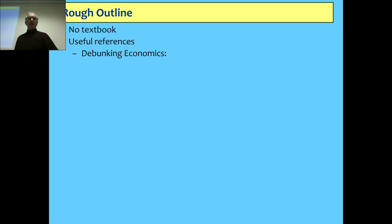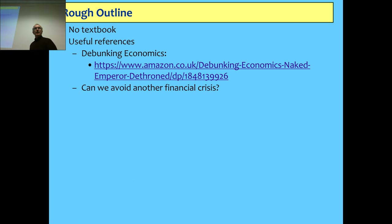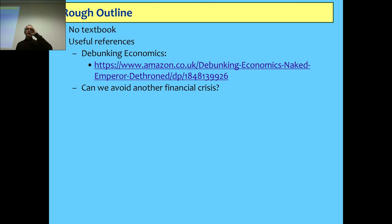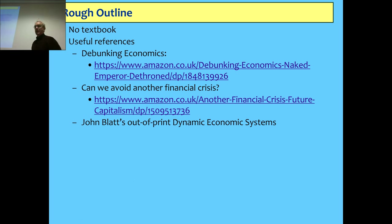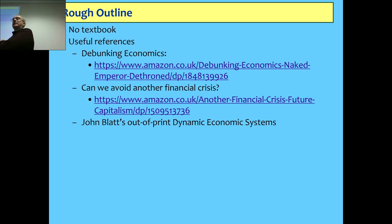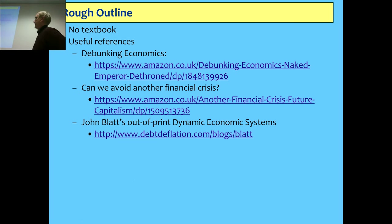I don't have any textbook — I'm rather critical of textbooks. Useful references: has anybody got a copy of Debunking Economics yet? And also Can We Avoid Another Financial Crisis? I'm happy to give PDFs of that one. I'm not requiring a set textbook, but it will give you a good overview of my approach to monetary modelling. There's one other book I highly recommend — I regard it as the best textbook from a non-neoclassical point of view in economics ever, but it's been out of print. Click on that link and you might find something useful.